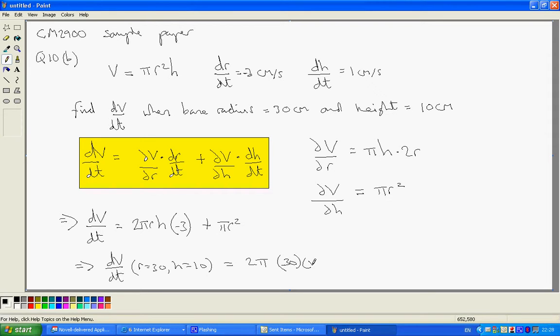Times minus 3, plus pi R squared, so that's pi times 30 squared.